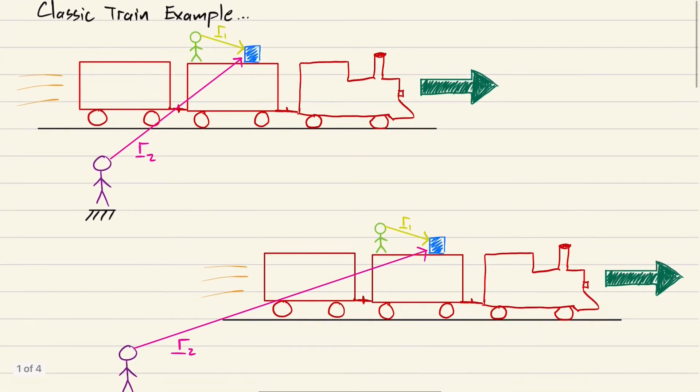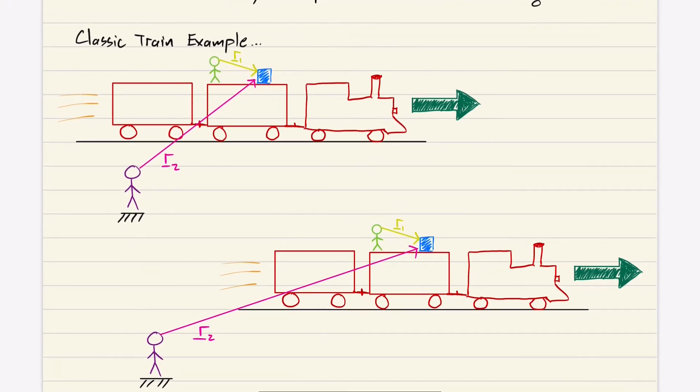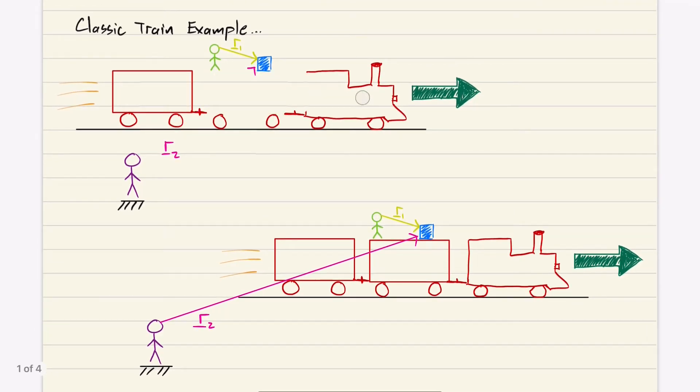There's this classic train example that always seems to pop up. Say you have a train moving on its tracks at some speed, and on the train you have this little green guy fixed to the train. From the little green guy's perspective as the train speeds along, this box is not moving.